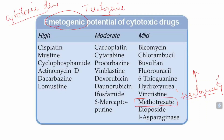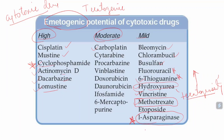Drugs with high teratogenic activity include mustine, cyclophosphamide, actinomycin D, dacarbazine, lomustine, carboplatin. Drugs with mild teratogenic activity include methotrexate, vincristine, hydroxyurea, 6-thioguanine, fluorouracil, busulfan, chlorambucil, bleomycin, and L-asparaginase. L-asparaginase, important in leukemia, is an enzyme used as an antineoplastic drug, and it also causes teratogenic action.